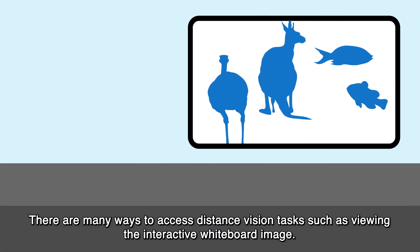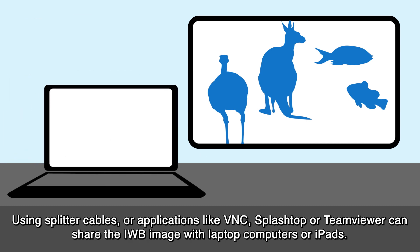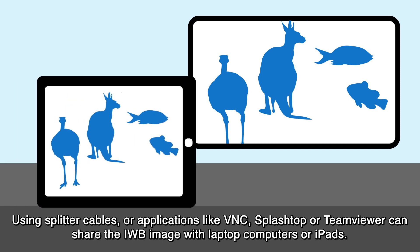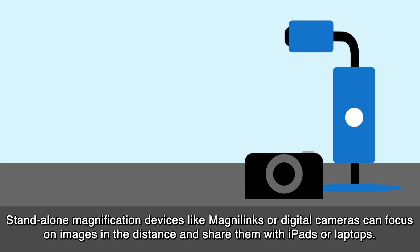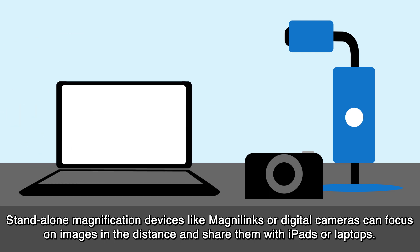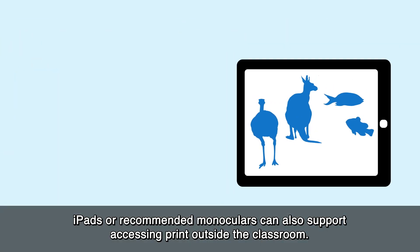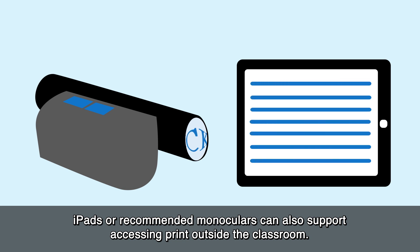There are many ways to access distance vision tasks such as viewing the interactive whiteboard image. Using splitter cables or applications like VNC, Splashtop or TeamViewer can share the IWB image with laptop computers or iPads. Standalone magnification devices like Magnalinks or digital cameras can focus on images in the distance and share them with iPads or laptops. iPads or recommended monoculars can also support accessing print outside the classroom.